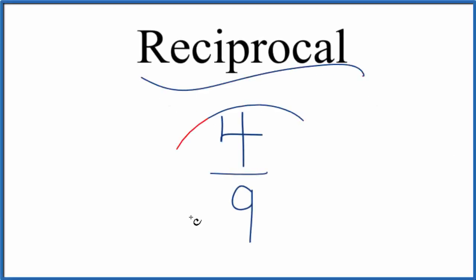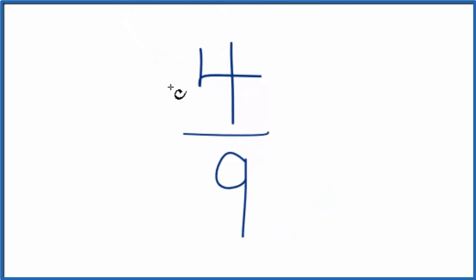Here's how you find the reciprocal for 4 ninths. When we're talking about reciprocals, what we're going to do is flip the numerator here and the denominator. Numerator 4 will go down here, denominator 9 will go up top.